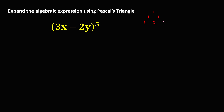that's 2, then ends with 1. Continue the process: starts with 1, add these 2 numbers. So 1 plus 2 is 3, 2 plus 1 is 3, then ends with 1. Starts with 1: 1 plus 3 is 4, 3 plus 3 is 6, 3 plus 1 is 4, then ends with 1.